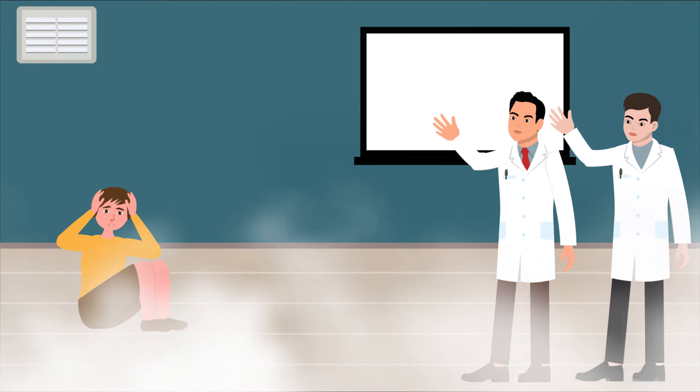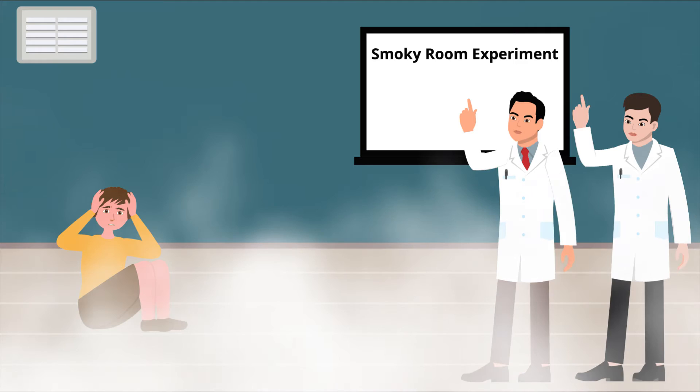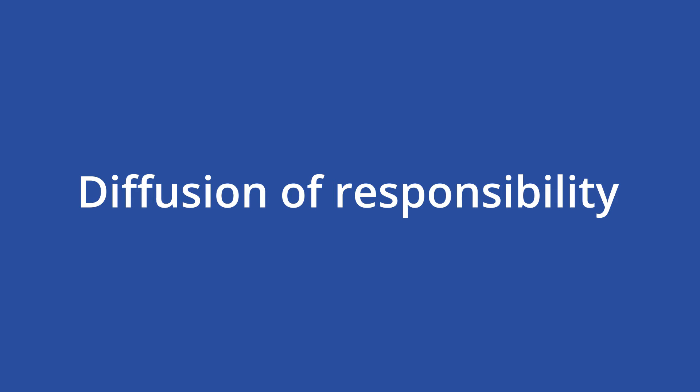Social psychologists Bibb Latané and John Darley put this exact situation to test in a 1968 study known as the Smoky Room Experiment. The Smoky Room Experiment was an investigation into a phenomenon known as diffusion of responsibility.